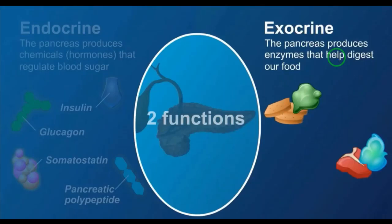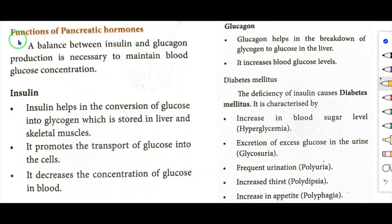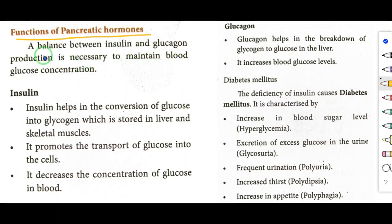Now we are going to see pancreatic hormones and their functions. A balance between insulin and glucagon production is necessary to maintain blood glucose concentration. First, let's see insulin.